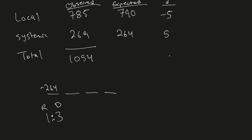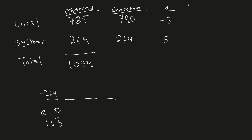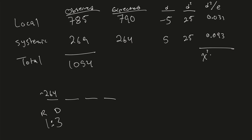This difference D, when squared, gives us 25 for local lesions and 25 for systemic infections. We then calculate the difference squared divided by the number of expected samples. So 25 divided by 790 gives us 0.031 for local lesions. And 25 divided by 264 gives us 0.093 for systemic infections. The chi-squared value is these two numbers added together, which gives us 0.124.